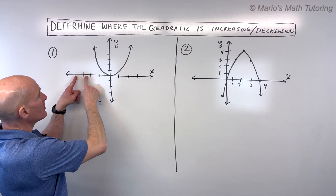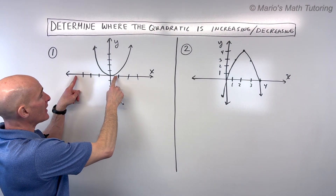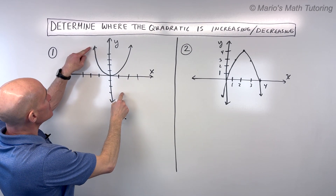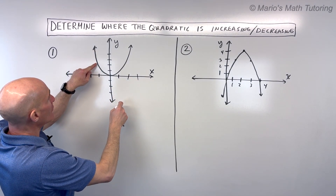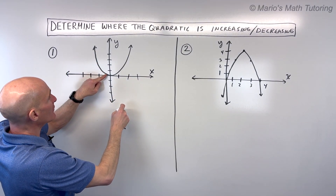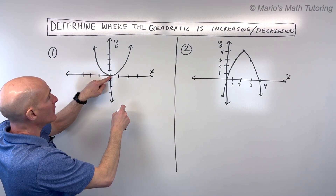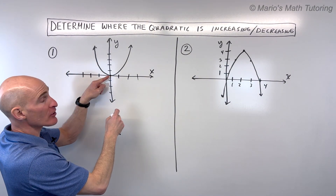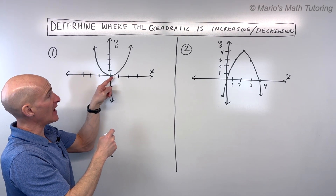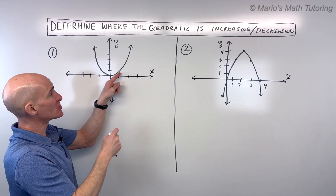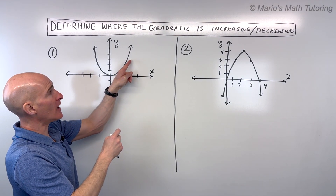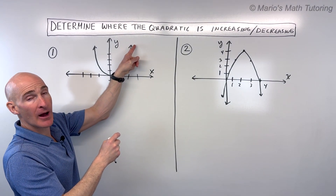Notice as I'm going to the right, you can see that this graph is going down. At this point here, which is the vertex, it starts to then change direction and it's going up.